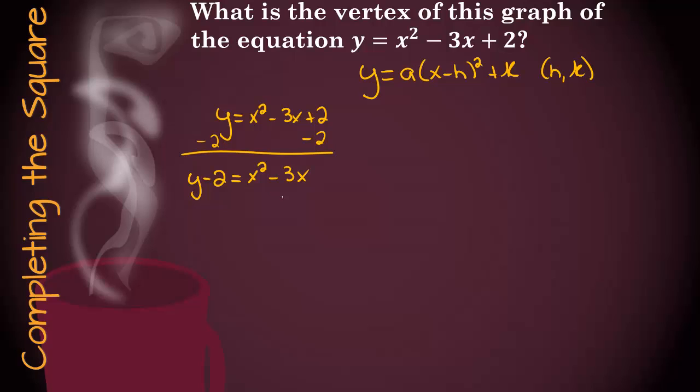And this is where we start completing the square. So I'm going to make a parentheses and a squared. What we're going to do is we're going to take half of this number. So we're going to have x minus 3 halves. And to fill in this number, we square this one.